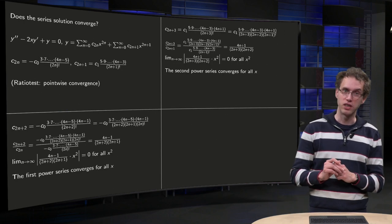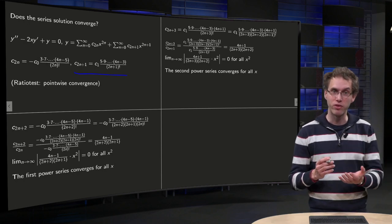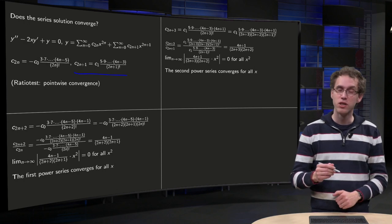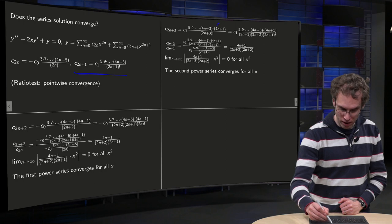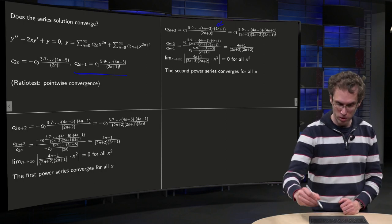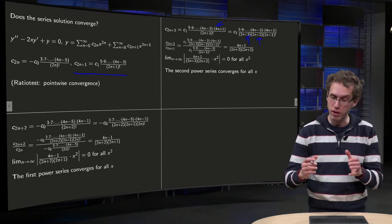Second power series, here we have c_{2n+1}. We can compute c_{2n+3} by plugging in n+1 into c_{2n+1}, so we get an additional 4n+1 over here, and we get a (2n+3) factorial, which becomes (2n+3)(2n+2) times (2n+1) factorial.